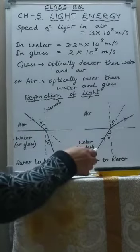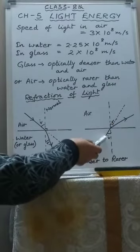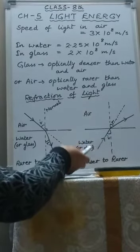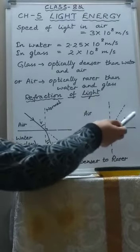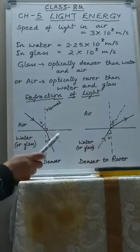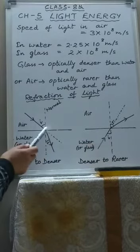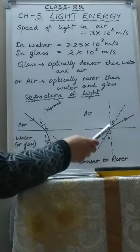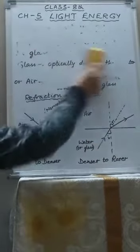Similarly, when a ray of light goes from a denser to a rarer medium — see this ray of light falling at the surface separating two media, air and water — water is denser than air. So when the light travels, instead of going straight, it bends away from the normal. You have to remember this point: when light goes from rarer to denser, it bends towards the normal, and when light goes from denser to rarer, it bends away from the normal.